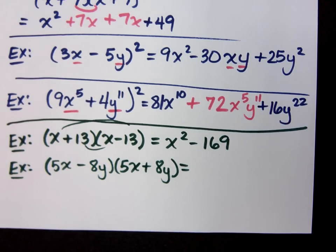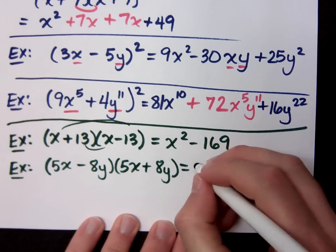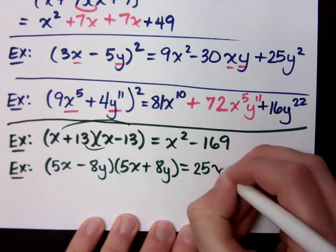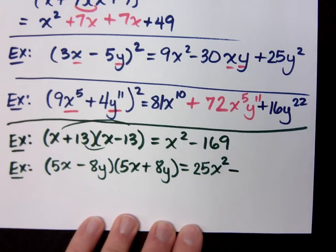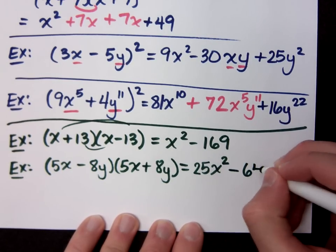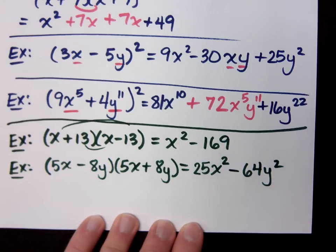Wait a minute. It's not 25x. It's 25x² minus what's the other piece? 64y². This should be pretty nice, right?